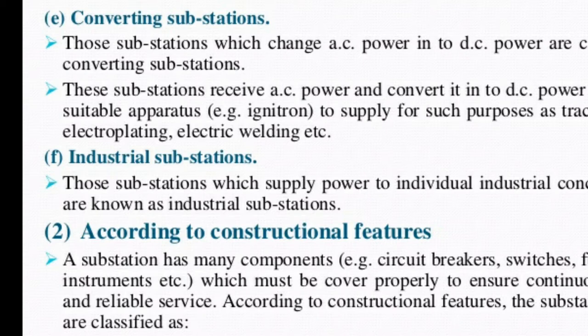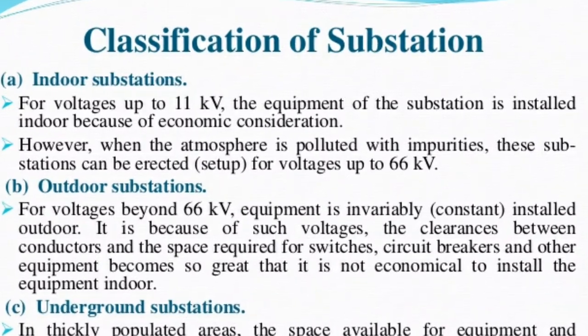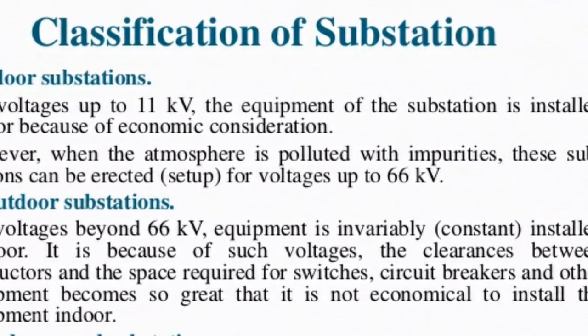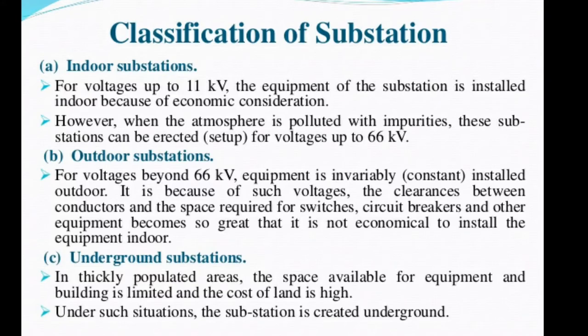Those substations which supply power to individual industrial consumers are known as industrial substations. According to constructional features, substations are classified into many types. Based on construction, substations are classified into indoor and outdoor substations. For voltages up to 11kV, equipment is installed indoors because of atmospheric concentrations. If atmospheric conditions are not good or impurities are present, substations can be erected up to 66kV with proper insulation or gas insulation. For voltages beyond 66kV, outdoor substations are preferred because insulation problems will not appear outdoors.